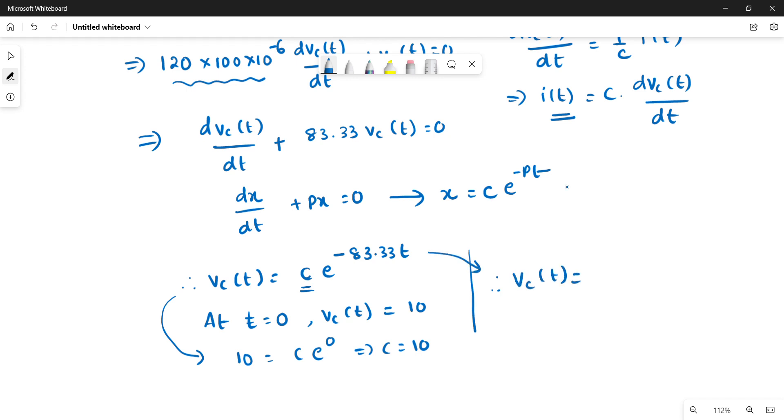So we can write this equation as 10 equal to c into e power 0. t is zero, so c value is 10.